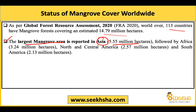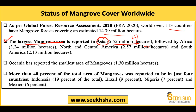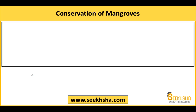Is type ka question bhi aapke 2000 plus MCQs mein daala hai: kis region mein puri world mein sabse zyada mangroves cover hai? Answer: Asia. Second number pe Africa aata hai. Oceania ke paas sabse kam area hai mangroves ka. Aur jo 40 percent total mangroves cover hai woh sirf 4 deshon ke andar milta hai: Indonesia, Brazil, Nigeria, aur Mexico. Sabse zyada kisi country ke paas: Indonesia - duniya ke 19 percent mangroves Indonesia ke paas hain.